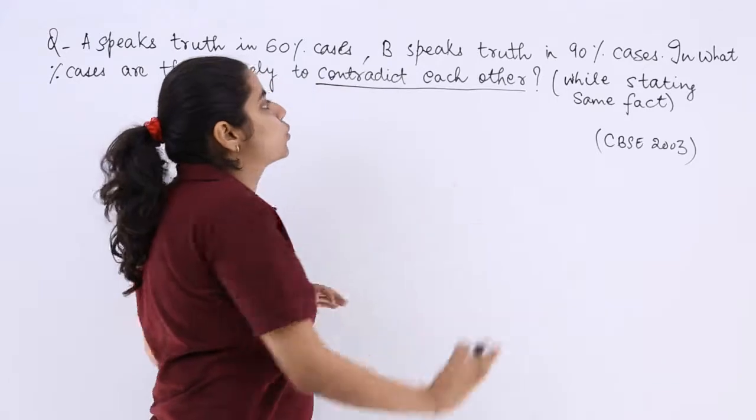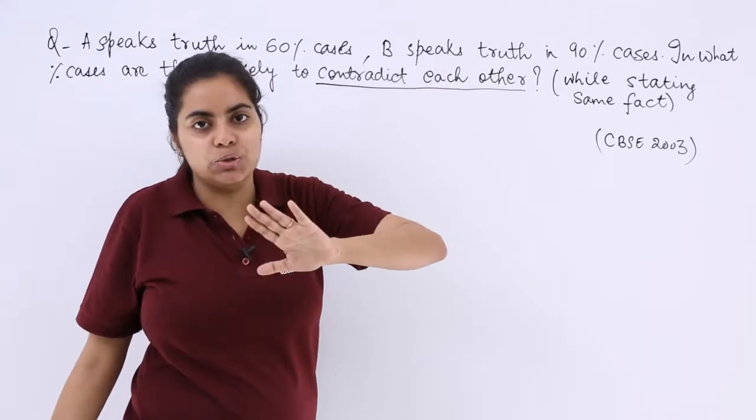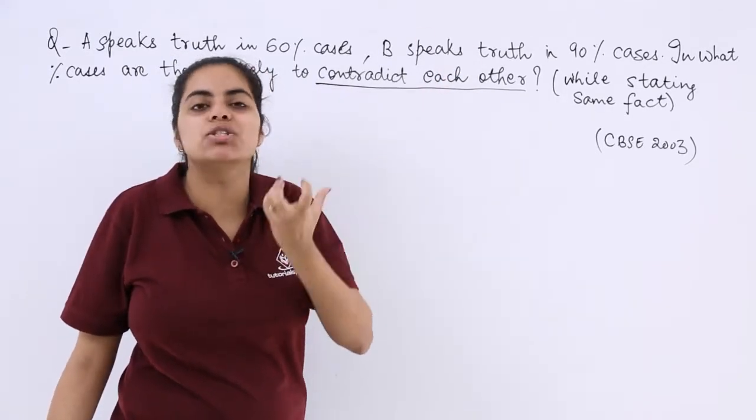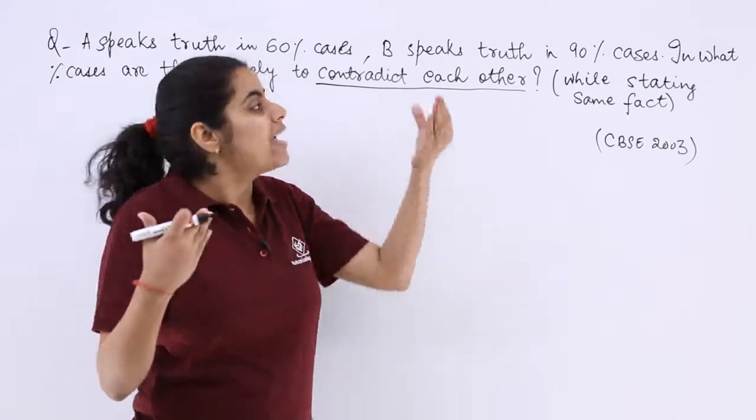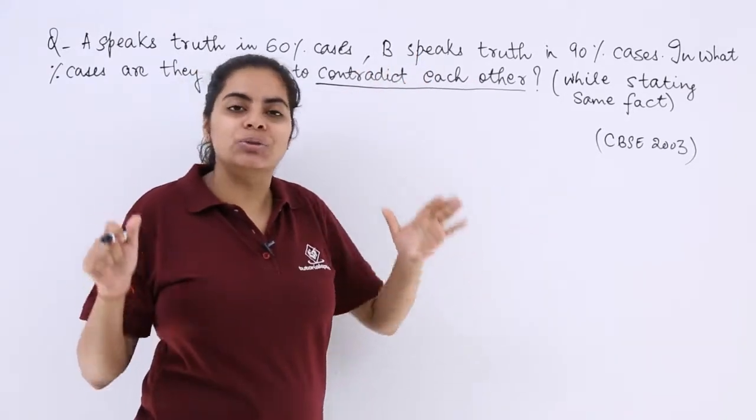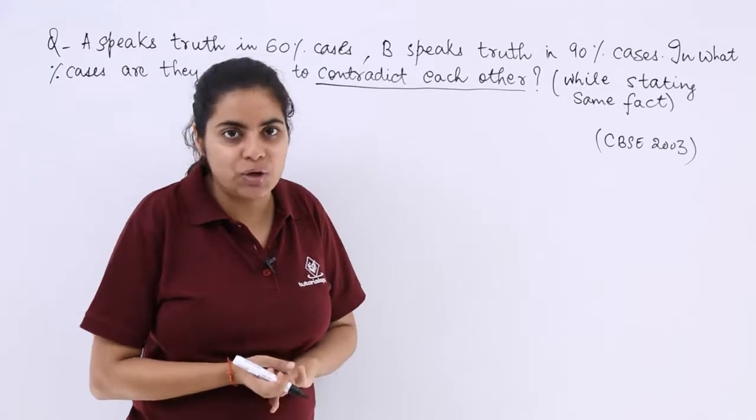That means if A speaks the truth then B will not speak the truth. B will lie. That is the case of contradicting. Or if B speaks the truth, A will not speak the truth. A will lie. That is the case of contradicting.